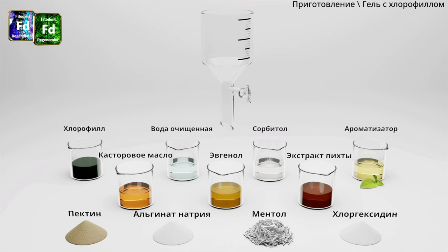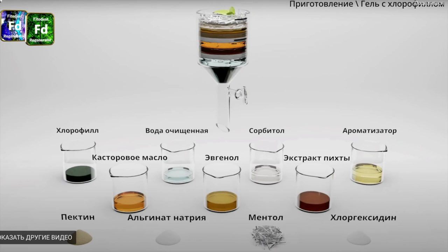Приготовление геля: смешивая все компоненты разнонаправленно, удаётся ввести их в основу так, чтобы они не выпадали в осадок и вся композиция геля была стабильна в течение всего срока годности. Хотя растительные компоненты не очень стабильны, конструкции достаточно сложные. Удалось добиться того, что даже после истечения срока годности при исследованиях антисептических, антиадгезивных и антибиоплёнкообразующих свойств все гели сохраняют биологическую активность — это обусловлено стабильностью компонентов в составе основ.